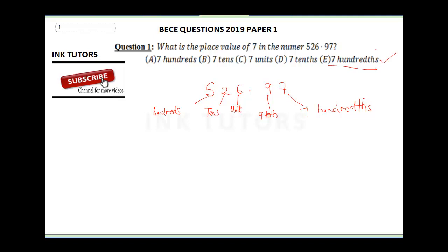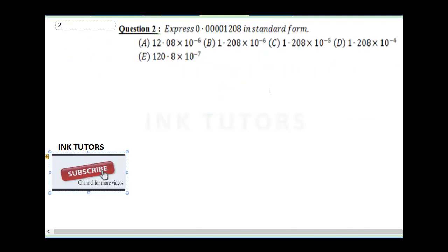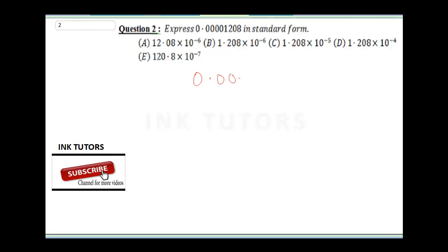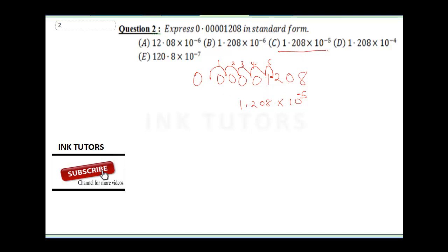Question two: Express 0.00001208 in standard form. We move the decimal point and count the places: one, two, three, four, five. So this becomes 1.208 times 10 raised to the power of negative five, because we're moving towards the right-hand side. Our final answer is 1.208 × 10⁻⁵, so C is the correct answer.